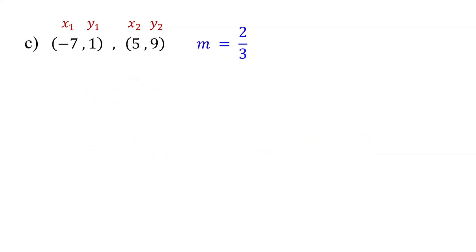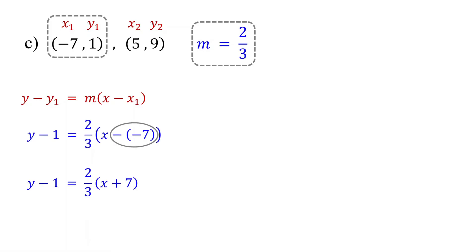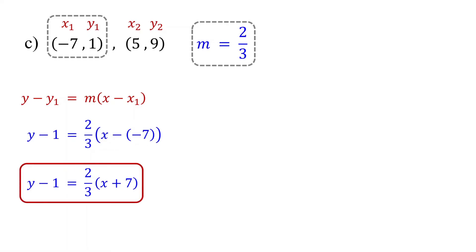Next, write the equation in point-slope form using the slope and one of the points. Use the first point and substitute the values — this simplifies to adding 7. Now we have the equation in point-slope form.